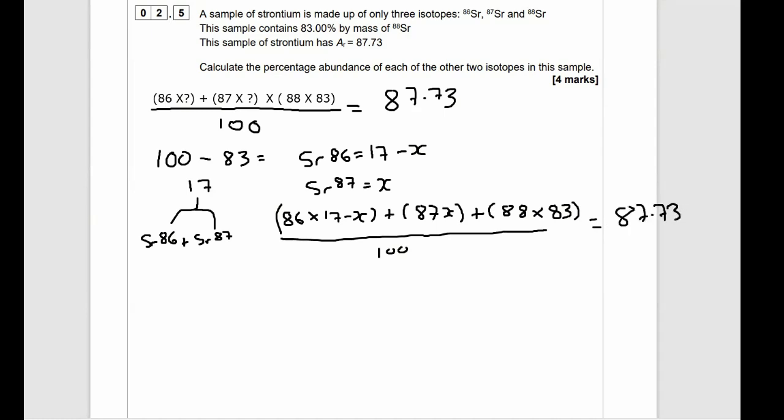Now, there's several ways to go here, but I want to get rid of the 100. So I'm going to multiply both sides by 100. And that's going to get rid of my 100 underneath. And I'm just going to times the right hand side by 100. So I'm going to rewrite this out. 86 times 17 minus X plus 87X plus 88 times 83 is equal to 100 times 87.73, which is 8,773.